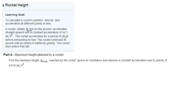The rocket accelerates for a period of 10 seconds before it runs out of fuel. Then the rocket continues its ascent until the motion is halted due to gravity, then enters free fall. They want you to find the maximum height that the rocket achieves, ignoring air resistance and assuming constant acceleration due to gravity of 9.81 meters per second squared.